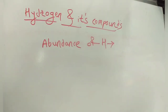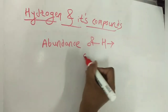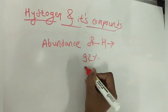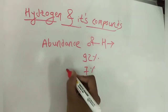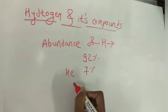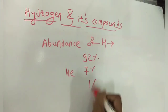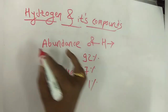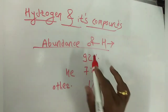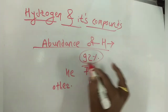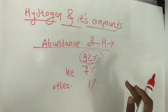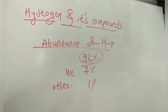The abundance of hydrogen in the universe is approximately 92%. Helium makes up about 7%, and all other elements account for only about 1%. So hydrogen is the most abundant element in the universe.